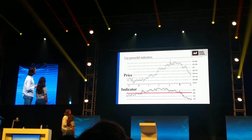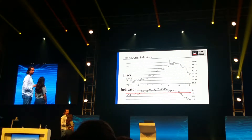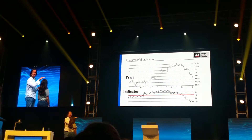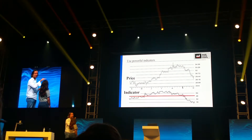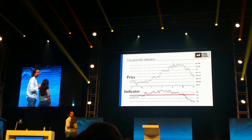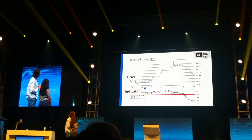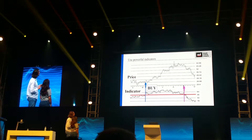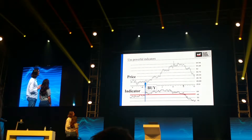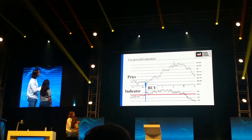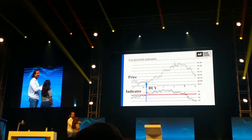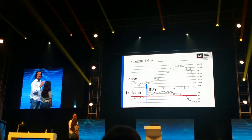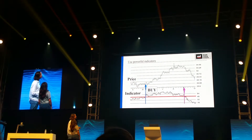The way it works is when the indicator line crosses above the red line, it tells you to buy — like it's done just there, it's crossed above the red line. And when the black line crosses below the red line, it tells you to sell.